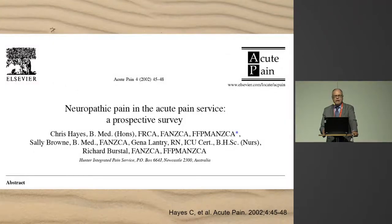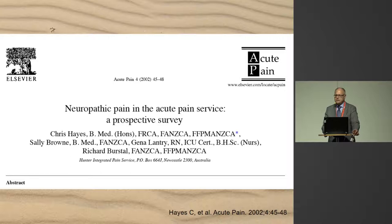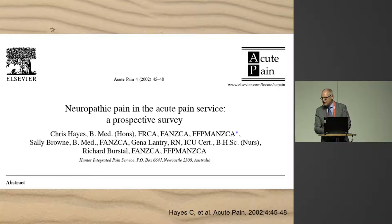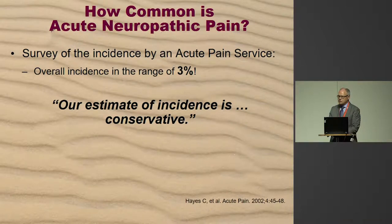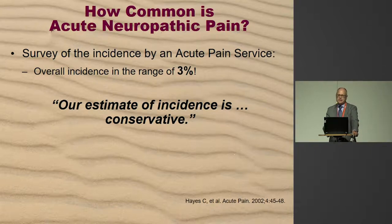There is an overarching review written by Chris Hayes from New South Wales, the last dean of the Faculty of Pain Medicine of the Australian and New Zealand College of Anaesthetists — the analogue to your two-year training program. He wrote a prospective survey and found that around 3% of patients his acute pain service was seeing had acute neuropathic pain.